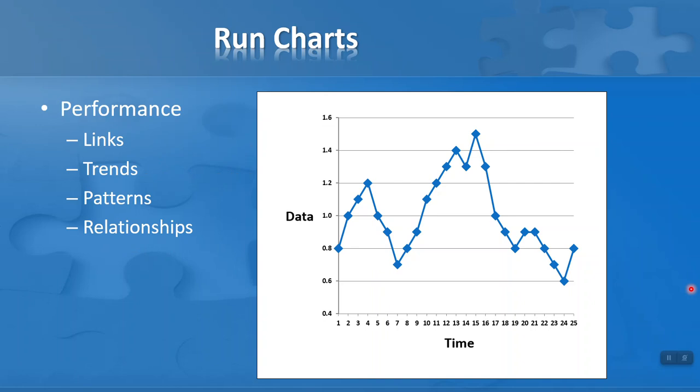With run charts, this is a picture of a run chart using data that I've made up for illustration purposes. This is a diagram that's easy to draw and measures performance. It shows us links, trends, patterns and relationships over a period of time. The chart plots data on the y-axis and time on the x-axis, so we can monitor data over a period of time.